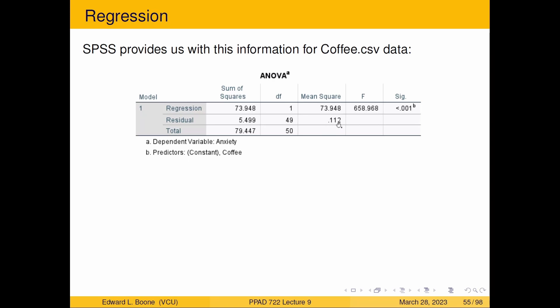So all of these pieces add up. You can see 49 plus one is 50. If you add these two together, you'll get the sums of squares total. And if we take our 73.948, which is our mean squared regression and divide it by our mean squared error 0.112, we will get 658.968. Now remember the F distribution is centered around one. This is ridiculously bigger than one. So we shouldn't be surprised that we get a significance level of less than 0.001. So this gives us the ability to test our hypothesis with this P value.